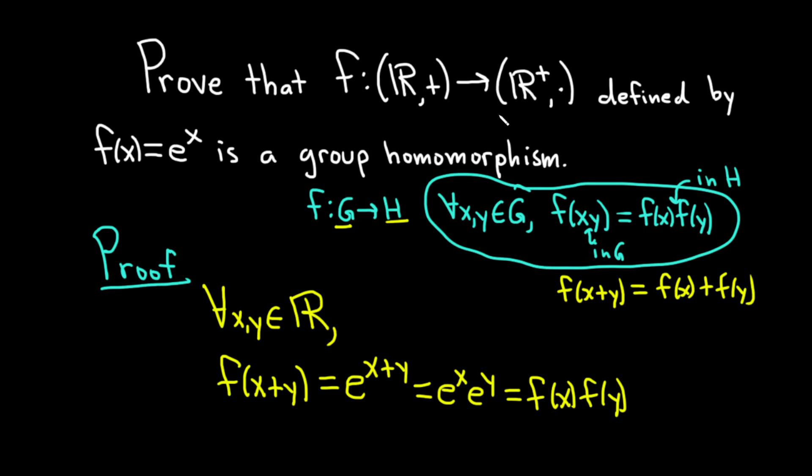And this makes sense. Here the operation is multiplication. So it's multiplication. So here it's addition. Here it's multiplication. So you have to adjust the notation accordingly. So we have that for all x, y, in R, f of x plus y is equal to f of x times f of y. So this shows that f is a group homomorphism.